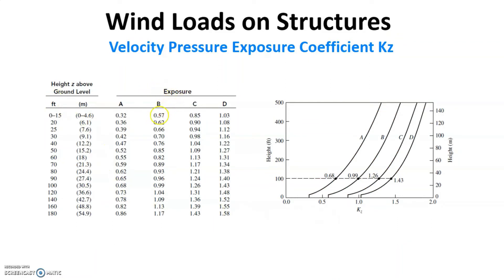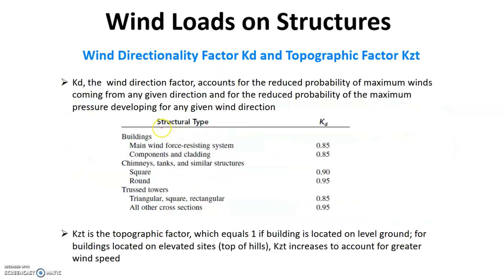The value of KZ is calculated based on this table, where this is the height in feet and this is the exposure condition. Based on the height that you need, for example 40 feet, you can pick the value from here. If your value's not here, you need to interpolate between the available values.